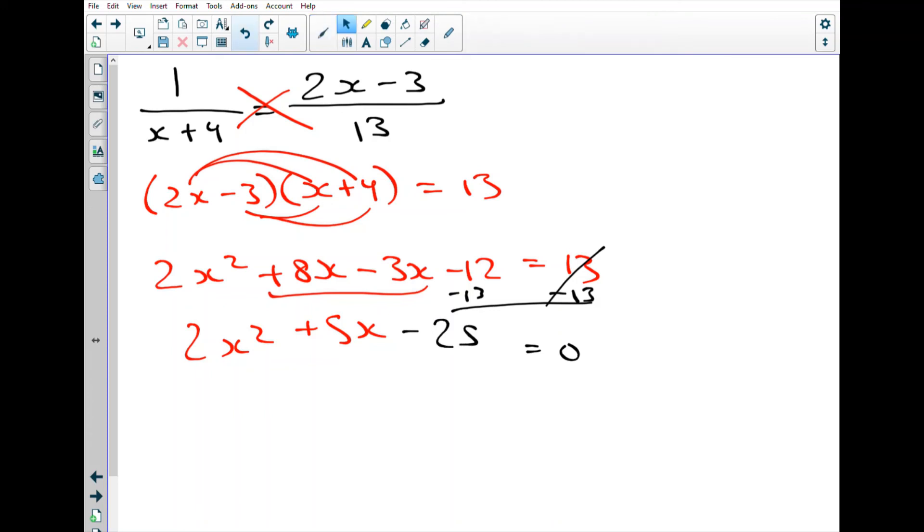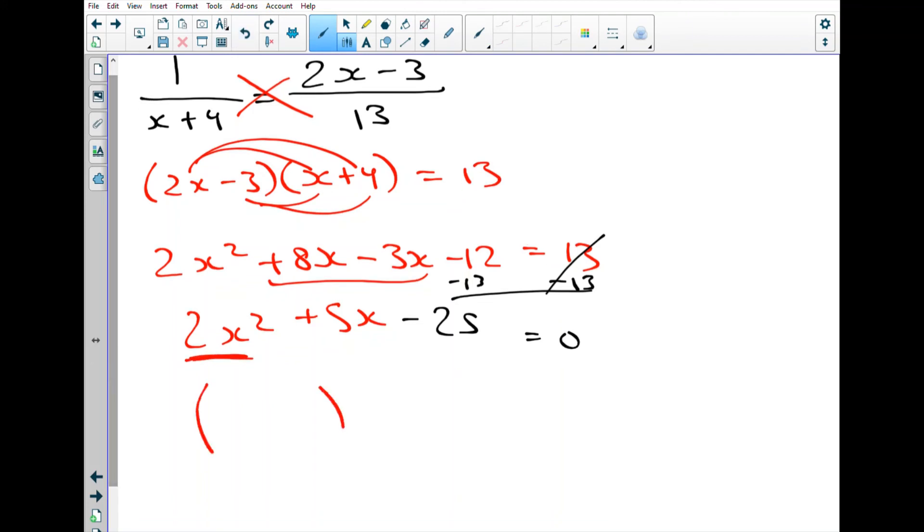Okay, now comes the factoring. Now, notice that the leading coefficient here is 2. It's 2x squared, not just x squared. So we need to start with decomposing that term. The only way to get 2x squared is to multiply 2x times x. So that's going to be our first pair of terms within each binomial. So that's going to complicate things a bit, as we're about to see. So 2x and x. And then we look at the factors of our constant term, which is 25. So factors of 25, let's see. I got 1 and 25, and you got 5 and 5. That's it. Okay. A fairly short list.